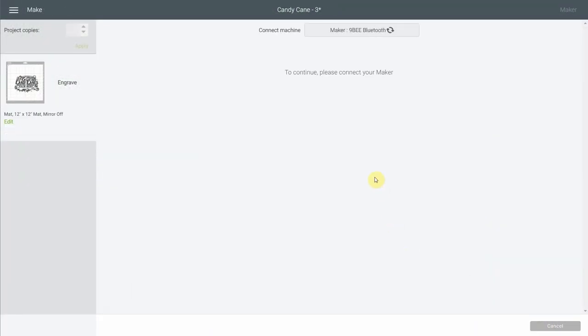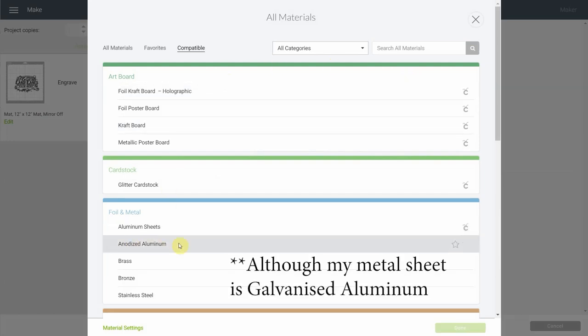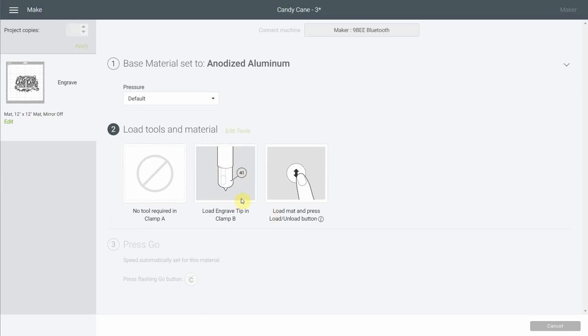So next step, we hit continue. It's pretty easy because when we browse all material, you're going to get anodized aluminum right here. So this is the one we select. We put the engraving tool in the maker and we're ready to engrave.